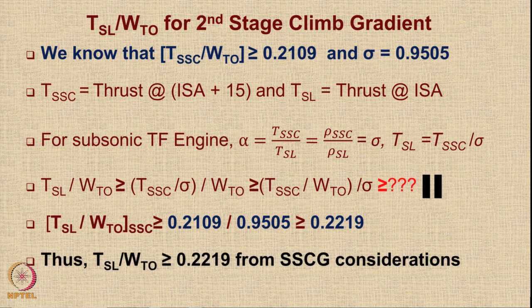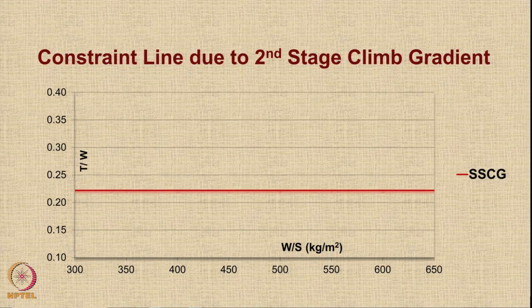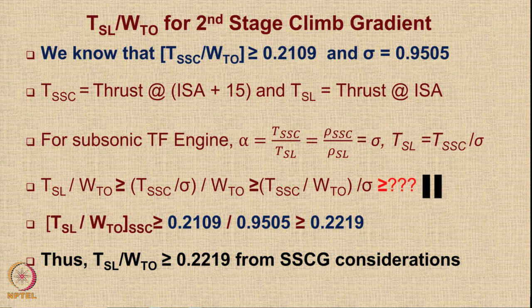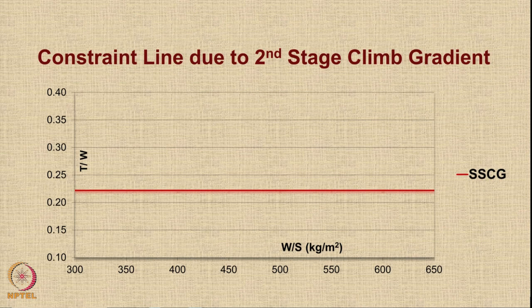Hence, the first conclusion is that the thrust-to-weight ratio of the aircraft should be more than 0.2219 from second stage climb gradient consideration. We will now do similar calculations for other constraints. The second stage climb gradient constraint appears as a single horizontal line on the constraint diagram — there is no role of wing loading, so we get a direct constraint on T/W. The area shaded below this line is infeasible; the area above is feasible.